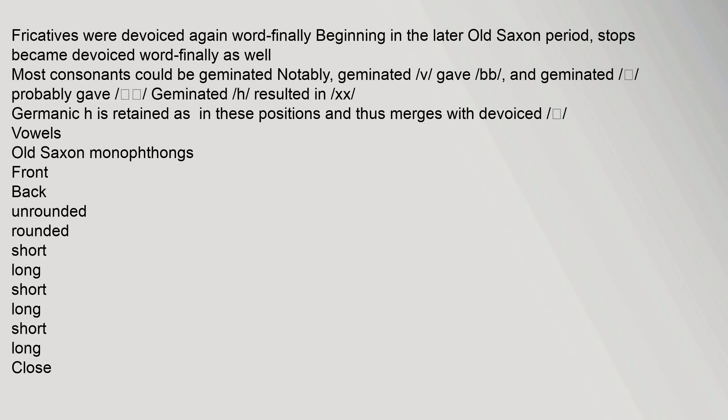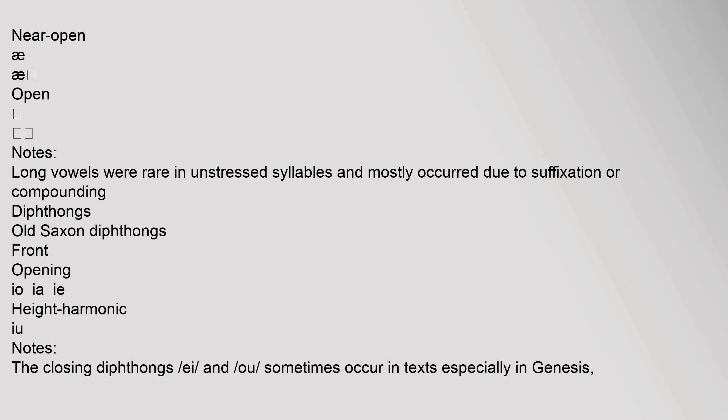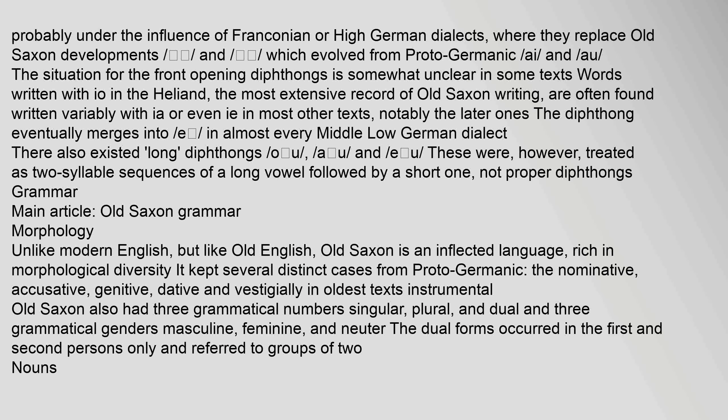Old Saxon monophthongs include front unrounded and back rounded vowels across close, close-mid, open-mid, near-open, and open positions. Long vowels were rare in unstressed syllables and mostly occurred due to suffixation or compounding. Regarding diphthongs, probably under the influence of Franconian or High German dialects, front-opening diphthongs io replace Old Saxon developments from Proto-Germanic ai and au. In some texts, words written with io in the Heliand — the most extensive record of Old Saxon writing — are found written variably with io or even ie; in most later texts the diphthong eventually merges into e. There also existed long diphthongs ou, au, and eu, though these were treated as two-syllable sequences of a long vowel followed by a short one, not proper diphthongs.